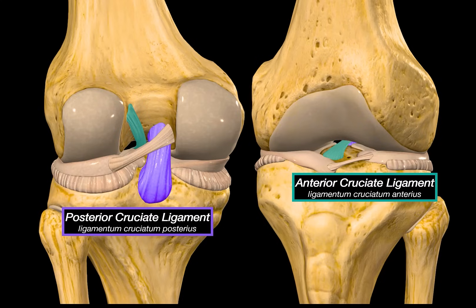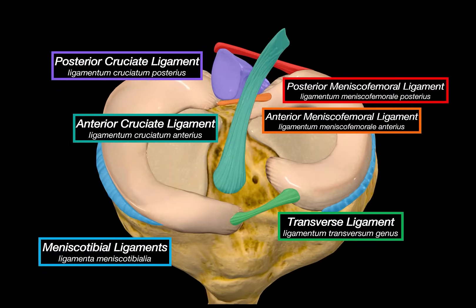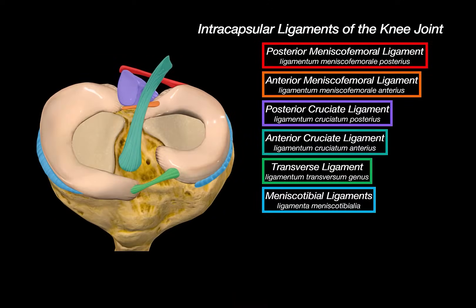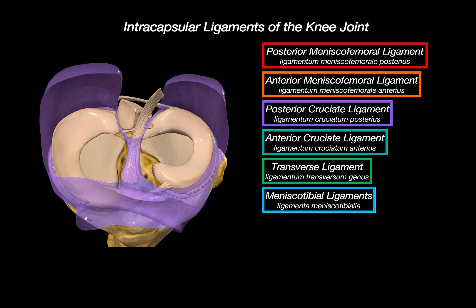They're called cruciate because of this crossing pattern — they literally form a cross, or crux. Clinically, the ACL is by far the most commonly injured ligament in the knee, especially in athletes. All the ligaments we just talked about are commonly referred to as intracapsular ligaments of the knee joint, because they all lie relatively within the knee capsule.